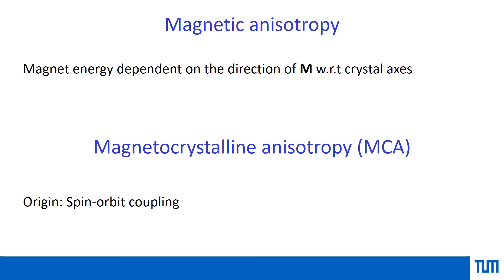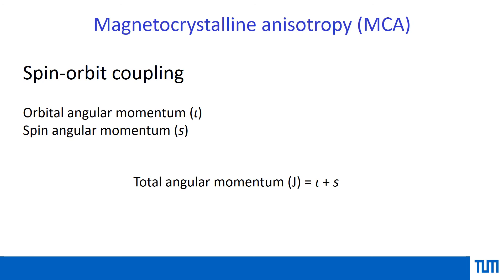The origin of this anisotropy lies in spin-orbit coupling, which is a relativistic interaction. The role of spin-orbit coupling in explaining magnetic anisotropy was first recognized by Bloch and Gentil in 1931. From the electrons of a magnetic atom, we have orbital angular momentum L and spin angular momentum S. This relativistic interaction, known as spin-orbit interaction, gives rise to an effective total angular momentum J.